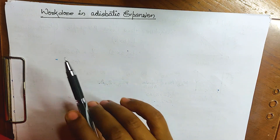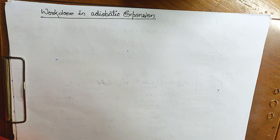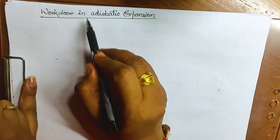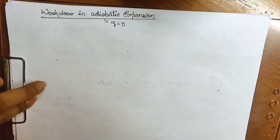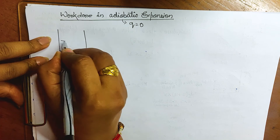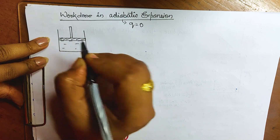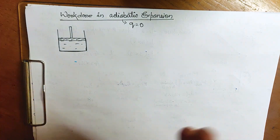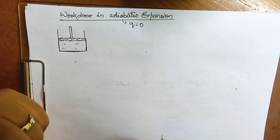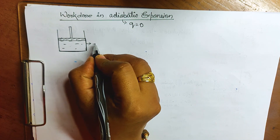Today we will do work done in adiabatic expansion. In the last class we have done work done in isothermal expansion, where the boundary wall should be conducting. But in adiabatic, there is no heat transfer, so q will be zero. The system has gas and a piston, and the wall will be completely insulated — heat should not transfer from the system to surroundings or from surroundings to system. So this should be absolutely insulated.